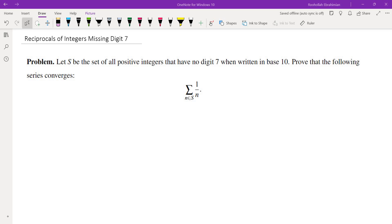Hello, in this video we're going to go over this interesting series problem. Let S be the set of all positive integers that have no digit 7 when written in base 10. Prove that the following series converges: the sum of the reciprocals of all of these numbers.